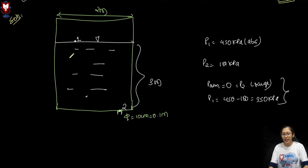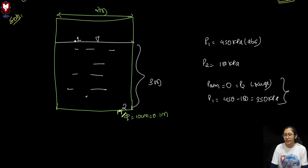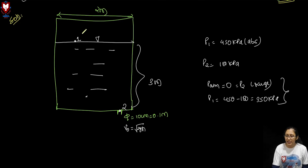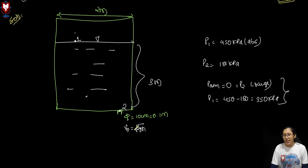Since we are neglecting frictional effects, the theoretical discharge equals the actual discharge — we do not need a discharge coefficient. For a non-pressurized tank, V0 equals the square root of 2gh. But here we must account for the air pressure at the surface, so we apply Bernoulli's equation at points 1 and 2.